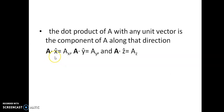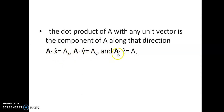The dot product of A with a unit vector gives the component of A along that direction. For example, A · x-cap = Ax, because x-cap · x-cap = 1 and x-cap · y-cap = 0 and x-cap · z-cap = 0. Similarly, A · y-cap = Ay and A · z-cap = Az. So to get the components of a vector, we take the dot product of the vector with the unit vector along that particular direction.